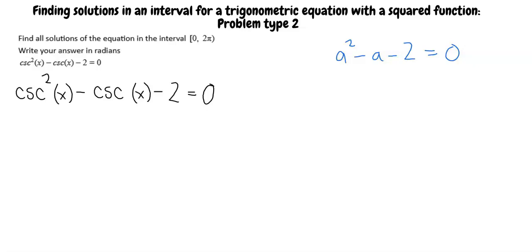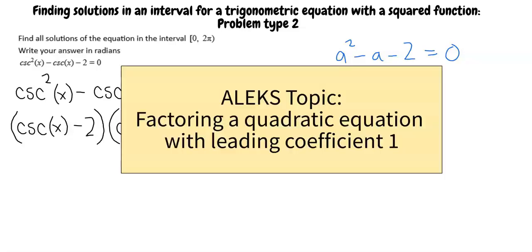Factoring, we get cosecant of x minus 2 times cosecant of x plus 1 equals 0. If you would like a review of how to factor an equation in this form, please review the Alex topic, Factoring a Quadratic Equation with Leading Coefficient 1.